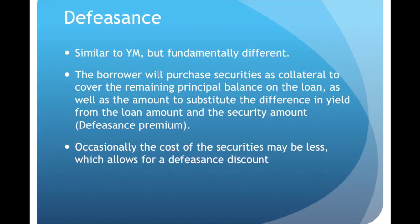With yield maintenance, you pay the lender as if they could purchase securities, but you're just paying them up front in cash. With defeasance, you're literally purchasing the securities, and those are held by a third party, generating the exact income that the lender would have earned from your loan payments. Occasionally the cost of the securities may be less — for example, if you're borrowing at three percent and US Treasury bonds are at three point three percent, you could actually save money. That's called a defeasance discount.